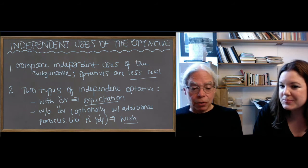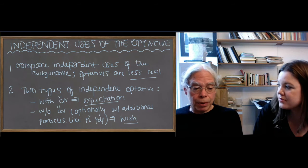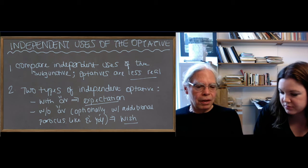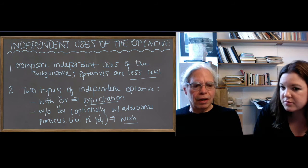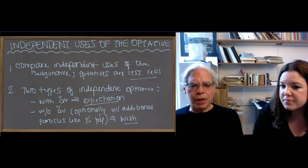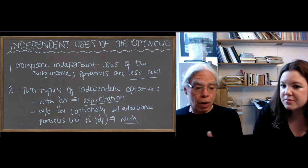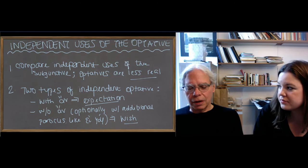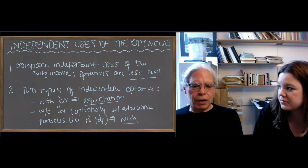Another independent use is prohibitions, which are just negative commands. And the last one is when you're asking yourself a question: 'Am I to do such and such a thing?' It's a weird sort of situation, but it's really about whether you want to do something, whether you want to consider the answer to a certain question. So they're all about wishes and they're relatively real.